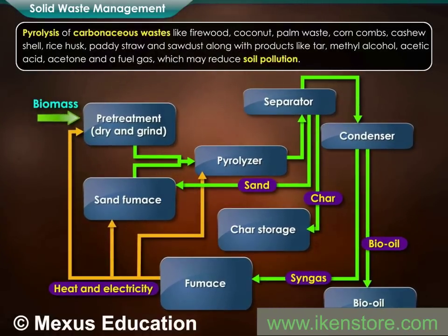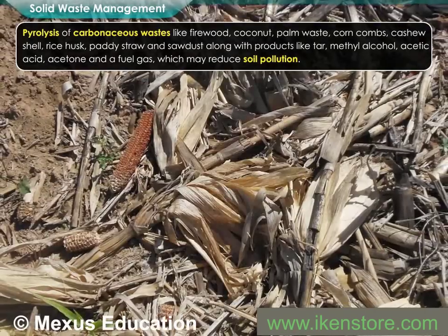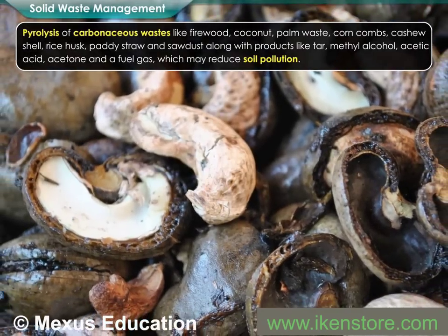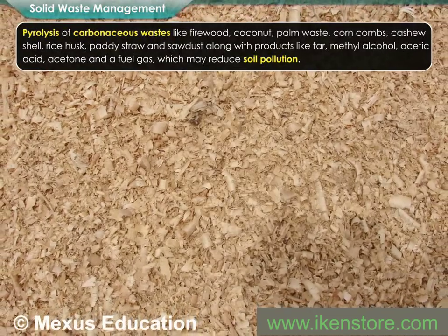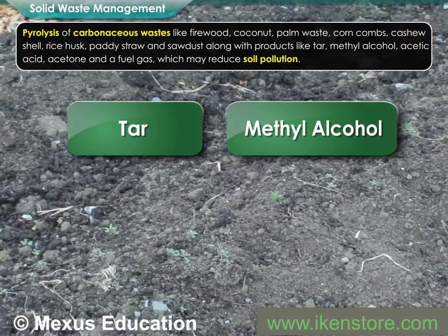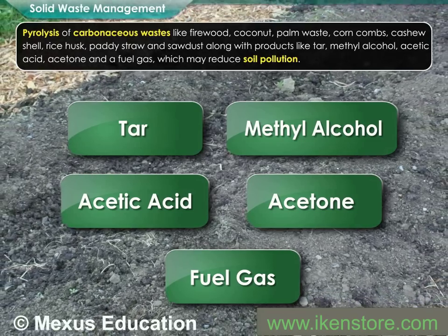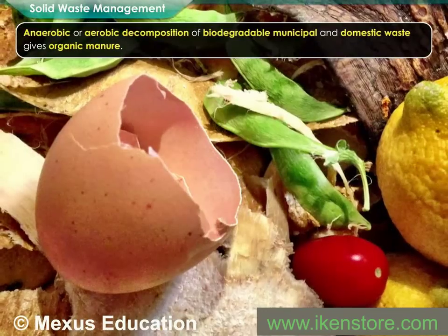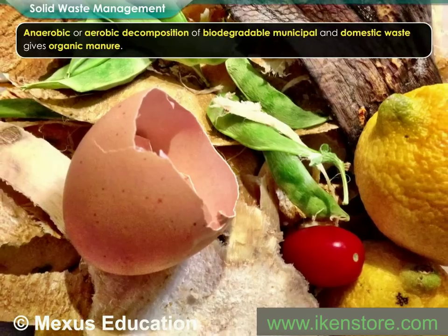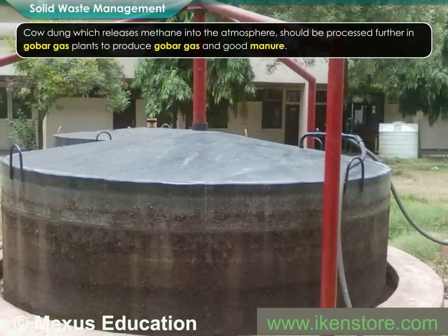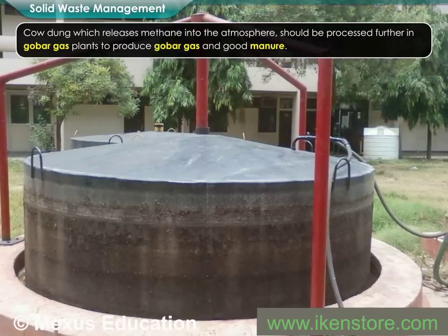Pyrolysis of carbonaceous wastes like firewood, coconut, palm waste, corn cobs, cashew shell, rice husk, paddy straw, and sawdust yields charcoal along with products like tar, methyl alcohol, acetic acid, and a fuel gas which may reduce soil pollution. Anaerobic or aerobic decomposition of biodegradable municipal and domestic waste gives organic manure. Cow dung, which releases methane into the atmosphere, should be processed further in biogas plants to produce biogas and good manure.